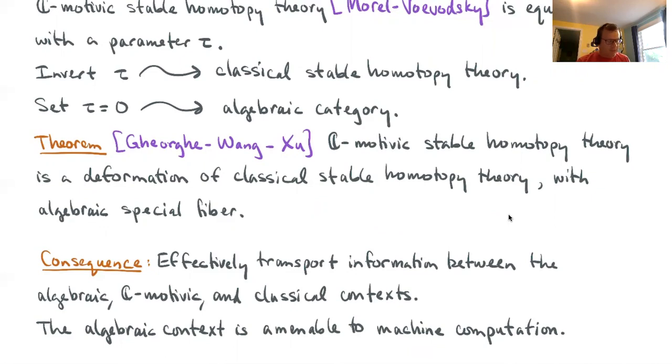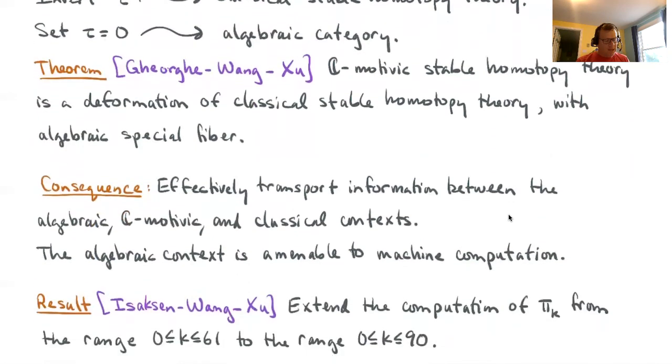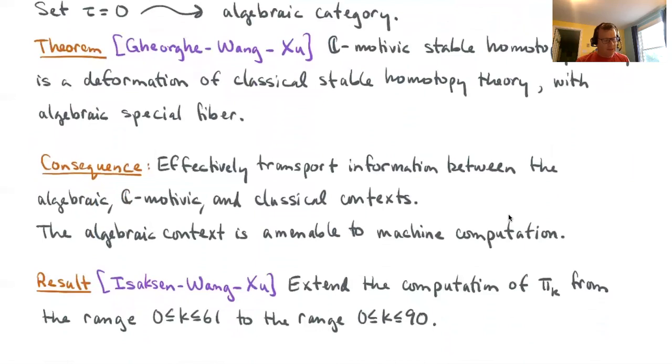As importantly, the algebraic context is amenable to machine computation. It's a purely algebraic category, entirely expressible in terms of homological algebra, and the computers can do the linear algebra to calculate in a very large range in this algebraic category. What we can do is then use the computer data in the algebraic category and then transport it to the C-motivic and classical contexts to obtain new topological information.